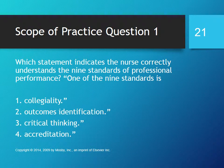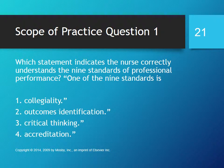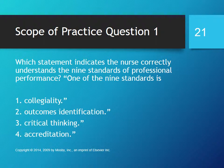Which statement indicates the nurse correctly understands the nine standards of professional performance? One: collegiality. Two: outcomes identification. Three: critical thinking. Four: accreditation. The answer is one — collegiality. The nine standards of professional performance are quality of practice, education, professional practice evaluation, collegiality, collaboration, ethics, research, resource utilization, and leadership. The six standards of practice, which make up the nursing process, are assessment, diagnosis, outcomes identification, planning, implementation, and evaluation. A key difference between RNs and LPNs is the orientation to the use of critical thinking skills. The accreditation process is intended to demonstrate to the public that a nursing program meets national standards requirements and criteria.